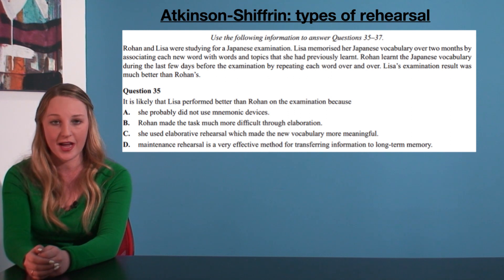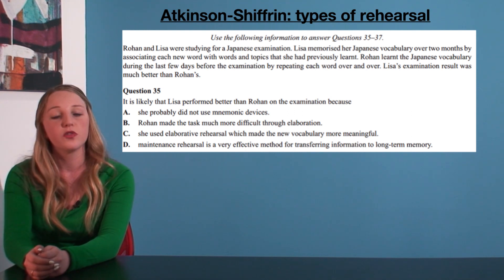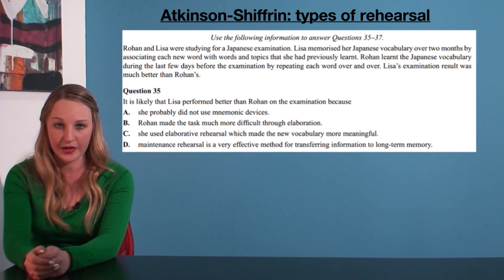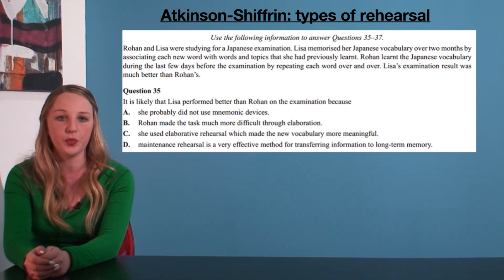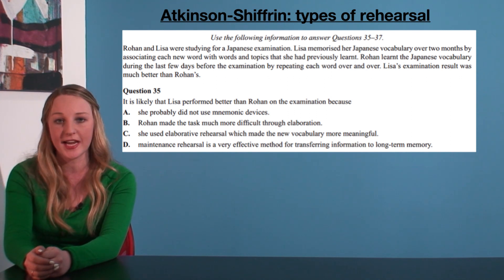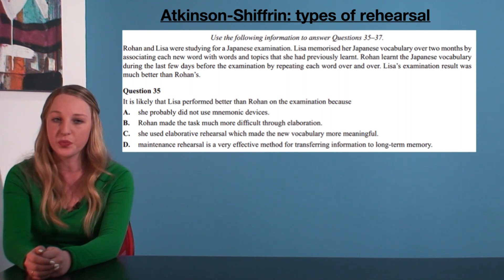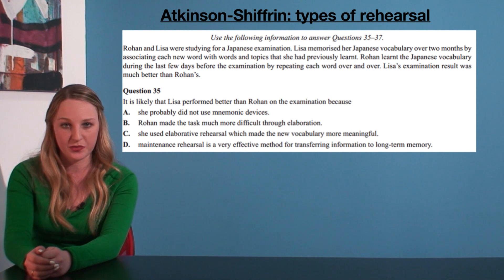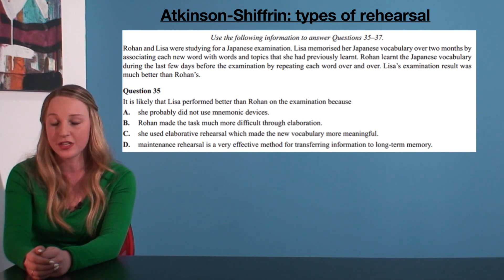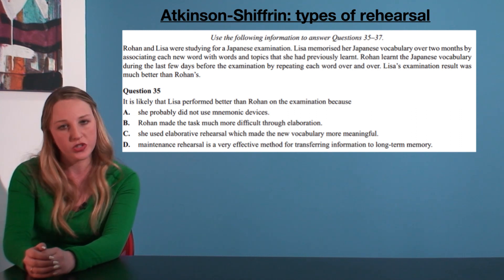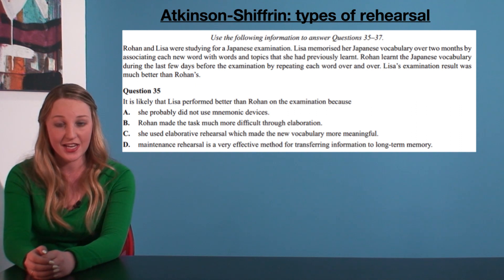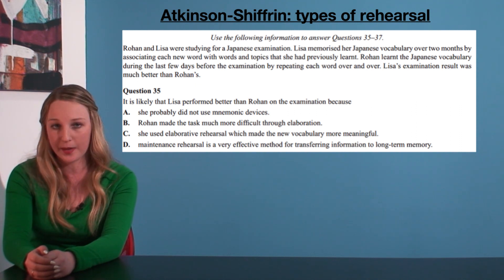Here is another question, this time from the 2011 VCE exam. Rowan and Lisa were studying for a Japanese examination. Lisa memorised her Japanese vocabulary over two months by associating each new word with words and topics that she had previously learnt. Rowan learnt the Japanese vocabulary during the last few days before the examination by repeating each word over and over. Lisa's examination result was much better than Rowan's. It is likely that Lisa performed better than Rowan because: A) she probably did not use mnemonic devices, B) Rowan made the task much more difficult through elaboration, C) she used elaborative rehearsal which made the new vocabulary more meaningful.